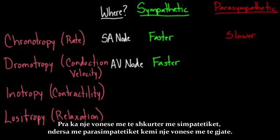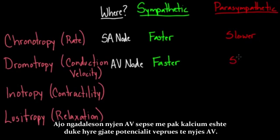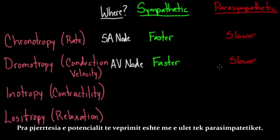With parasympathetics, there's a longer delay at the AV node because you have less calcium coming in during the action potential. So the slope of the action potential is slower with parasympathetic activity.